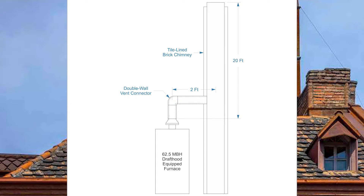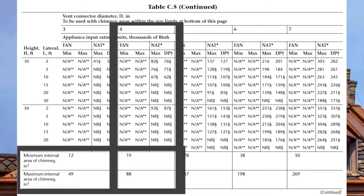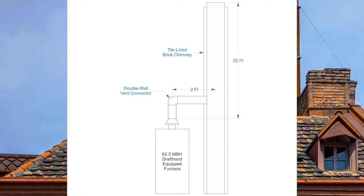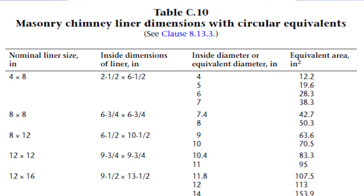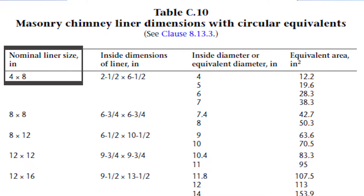To size the chimney, go to the next page and continue down the four-inch vent connector area to the very bottom. There you'll find 19 and 88, representing the minimum and maximum internal area of the chimney in square inches. Since square inches aren't intuitive, go to page 220 of the code, Table C10. The equivalent area is 12.2 square inches minimum. Going across to the left, you can have a round chimney of 4 inches, or a rectangular nominal liner size of 4 by 8 inches.